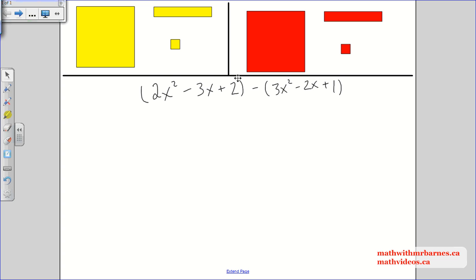Subtracting polynomials with algebra tiles is a little trickier than adding them, so there's kind of a bit of a trick to this one. First thing I do is always represent the first polynomial completely. I don't bother with the second one right away, I just do the first one.